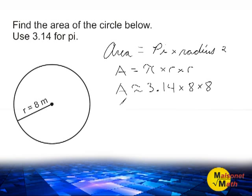So to find the area of this circle, we must multiply 3.14 times 8 times 8. And 8 times 8 is 64, so after multiplying 3.14 times 64, we will figure out what the area of the given circle is.